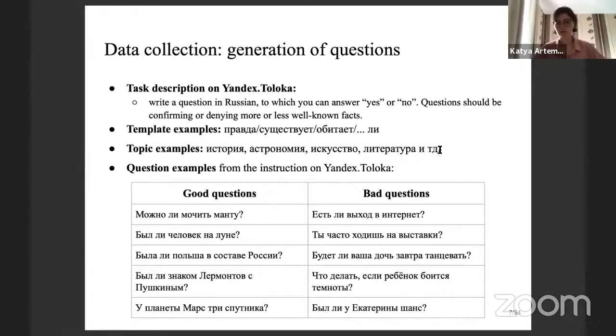For example, one of the templates included words in Russian like 'is it true that' or 'does there exist something like,' and the crowdsourcers would have to create questions using these templates. We also limited the topics that the crowdsourcers would use for creation of the questions because we didn't want to have something obscene or inappropriate in the dataset. Then we had to manually filter out some of the questions that indeed were inappropriate.